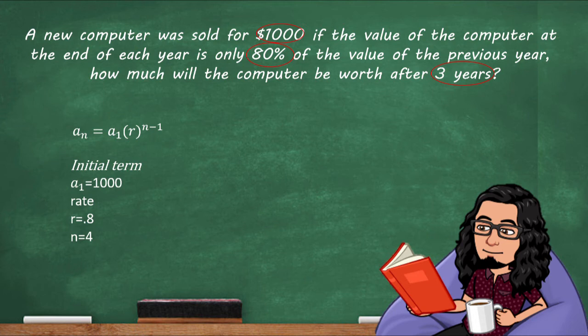Following our formula, a sub 4, our last term, is gonna be equal to a thousand dollars multiplied times our rate 0.8 with an exponent of n minus 1. 4 minus 1 equals 3. So our answer is gonna be equal to 512. Remember, because we're giving context we need to give our answer in context. So the value of the computer after three years will be 512 dollars.